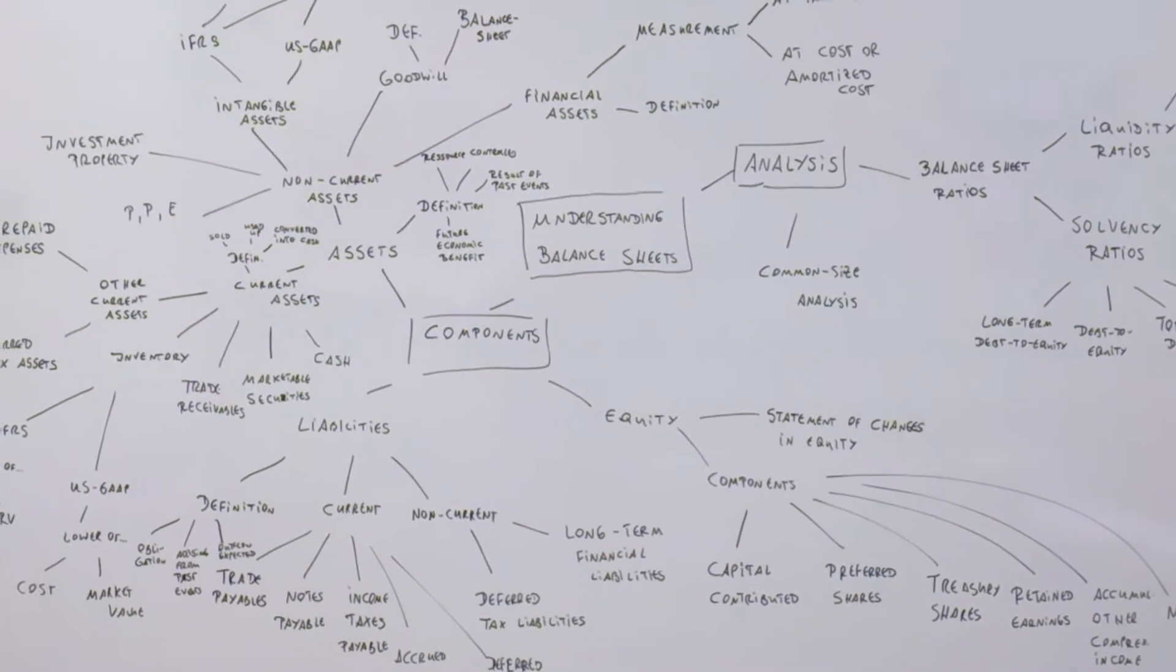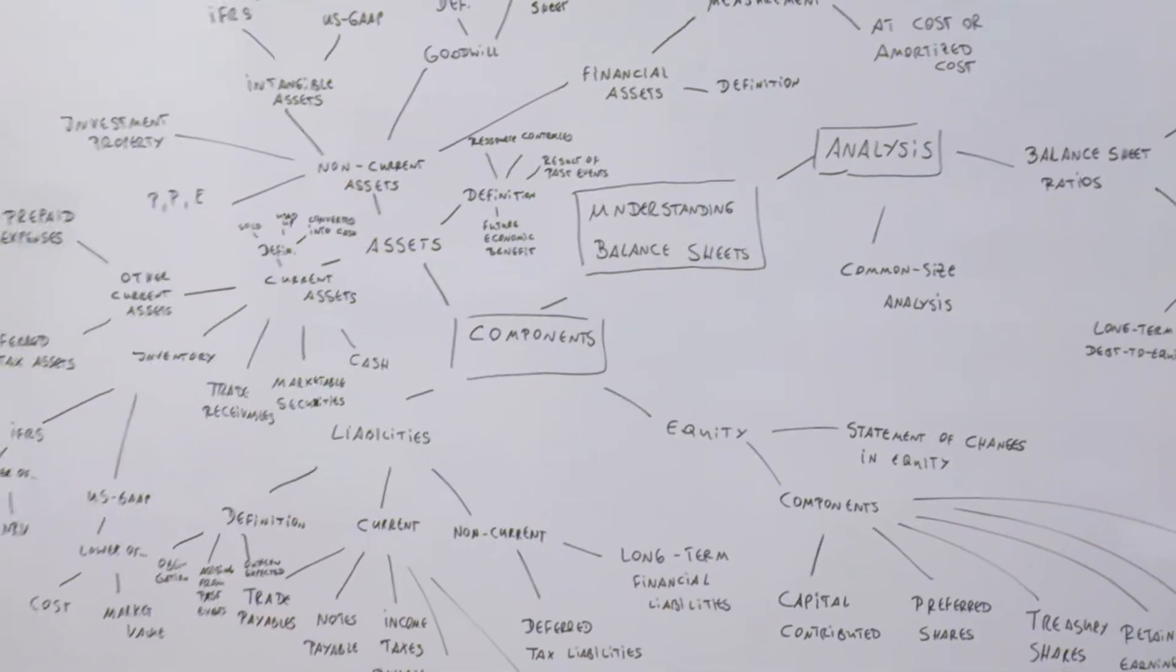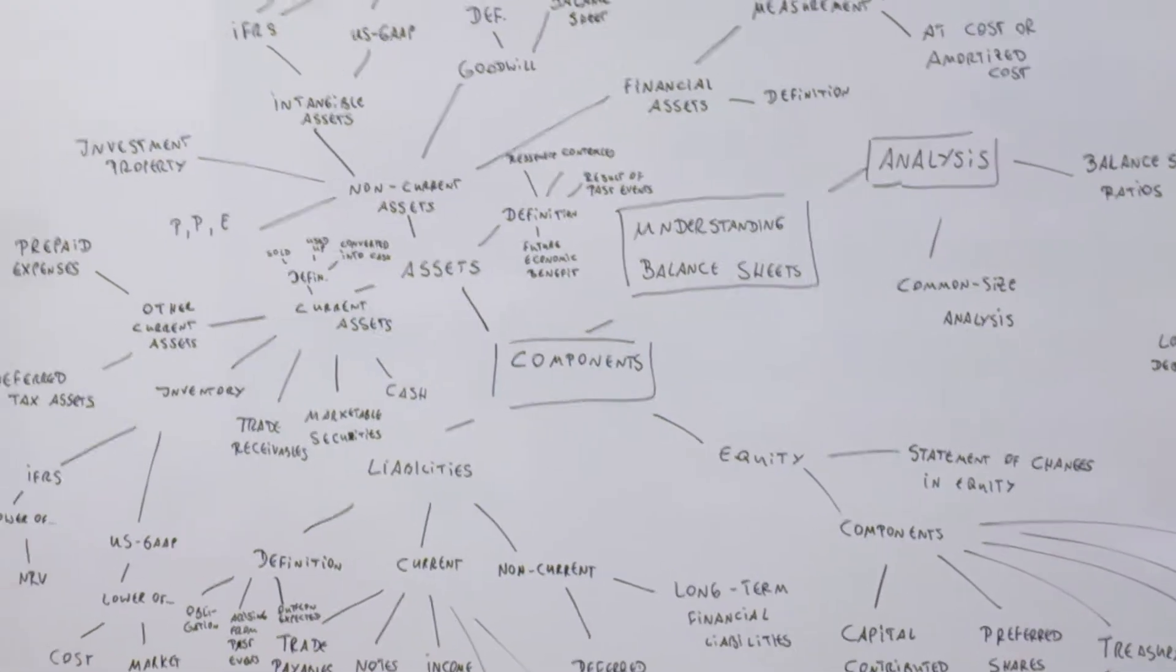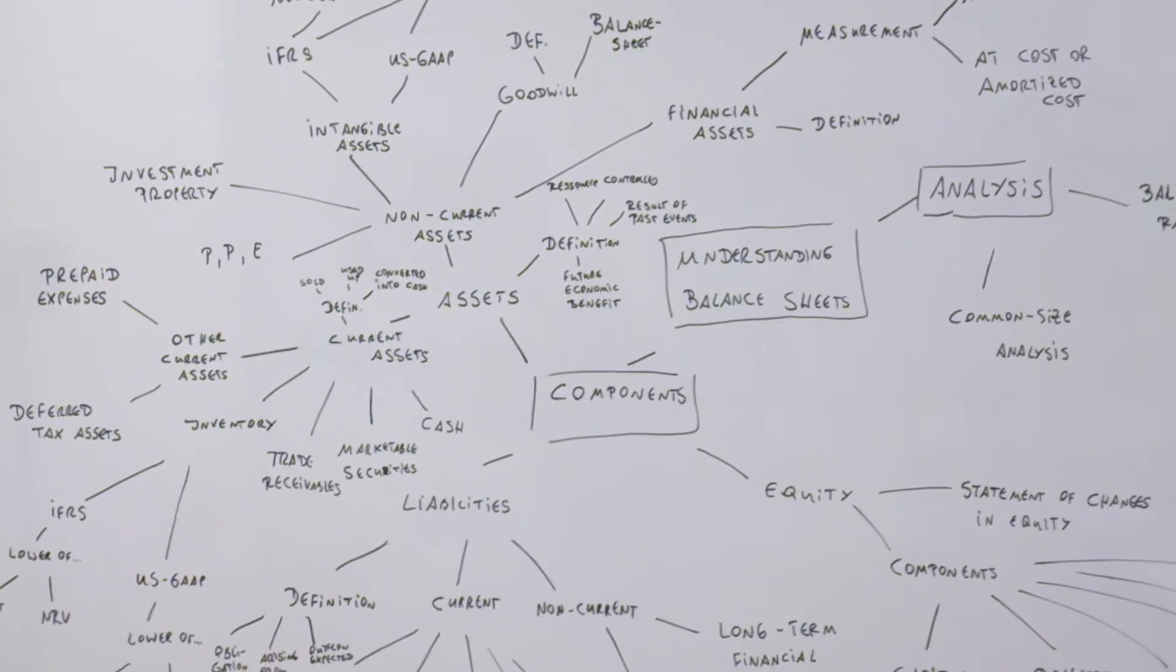So first, components of the balance sheets: assets, liabilities, and equity. What is an asset? What is the definition of assets?